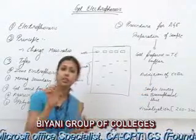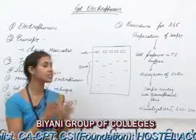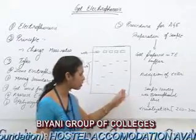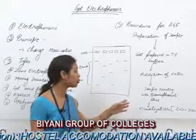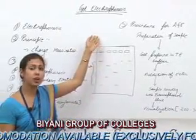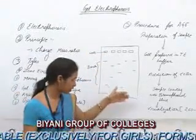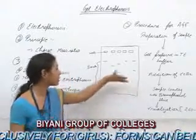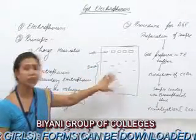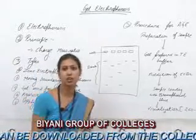Ethidium bromide intercalates into the double-stranded DNA molecule, and when visualization is done, we can easily see bands appearing reddish-orange. In the next step, sample loading, the sample is added with bromophenol blue and loaded into the wells. As you can see here, when the electric field is applied — normally 50 to 100 volts — the DNA starts moving. When it crosses three-fourths of the gel, the electric field is stopped and visualization is done under a UV illuminator at a wavelength of 260 to 300 nanometers.